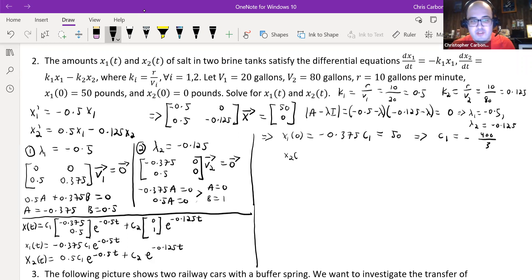And then x₂(0), this would give us 0.5 times c₁ plus c₂. But we already know what c₁ is. Why don't we put that in there? Negative 400 over 3 times 0.5, this would give us negative 200 over 3. So because of that, this implies that c₂ has to be positive 200 over 3.